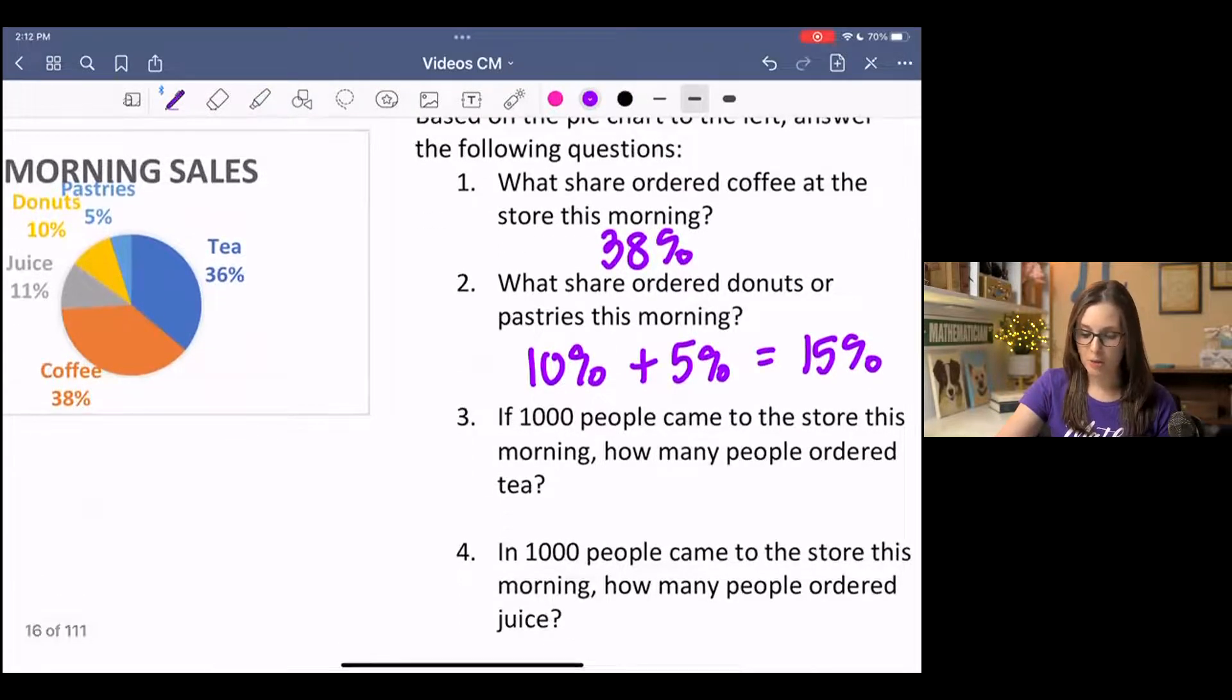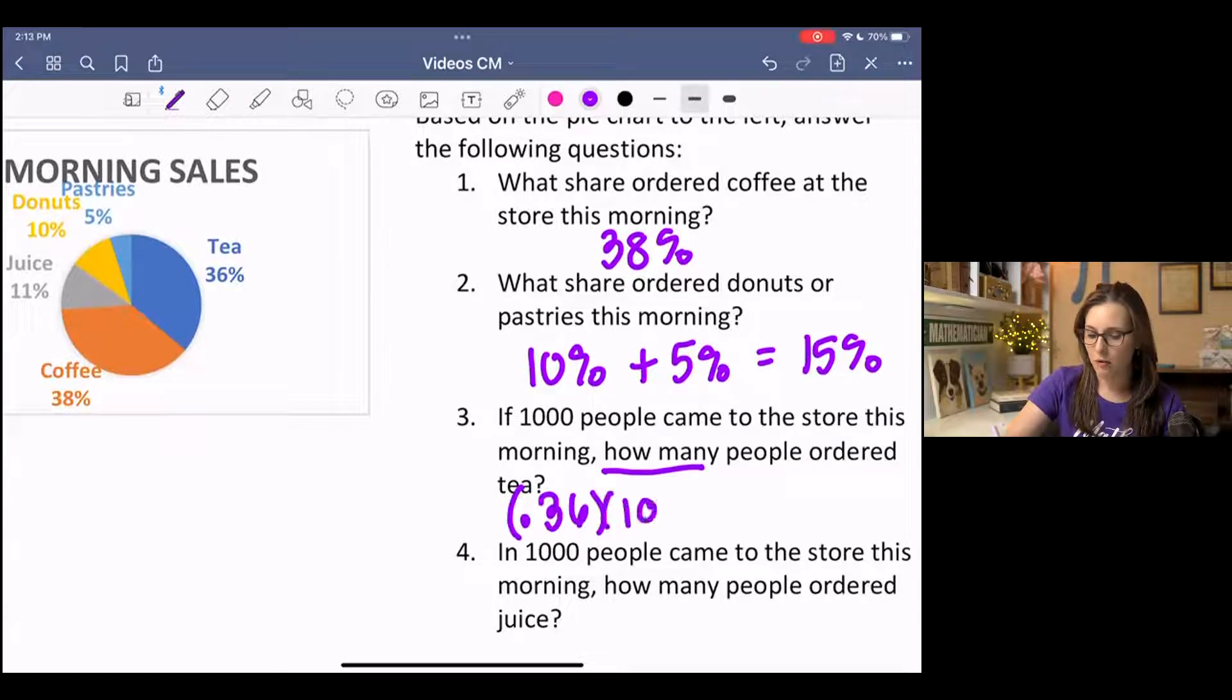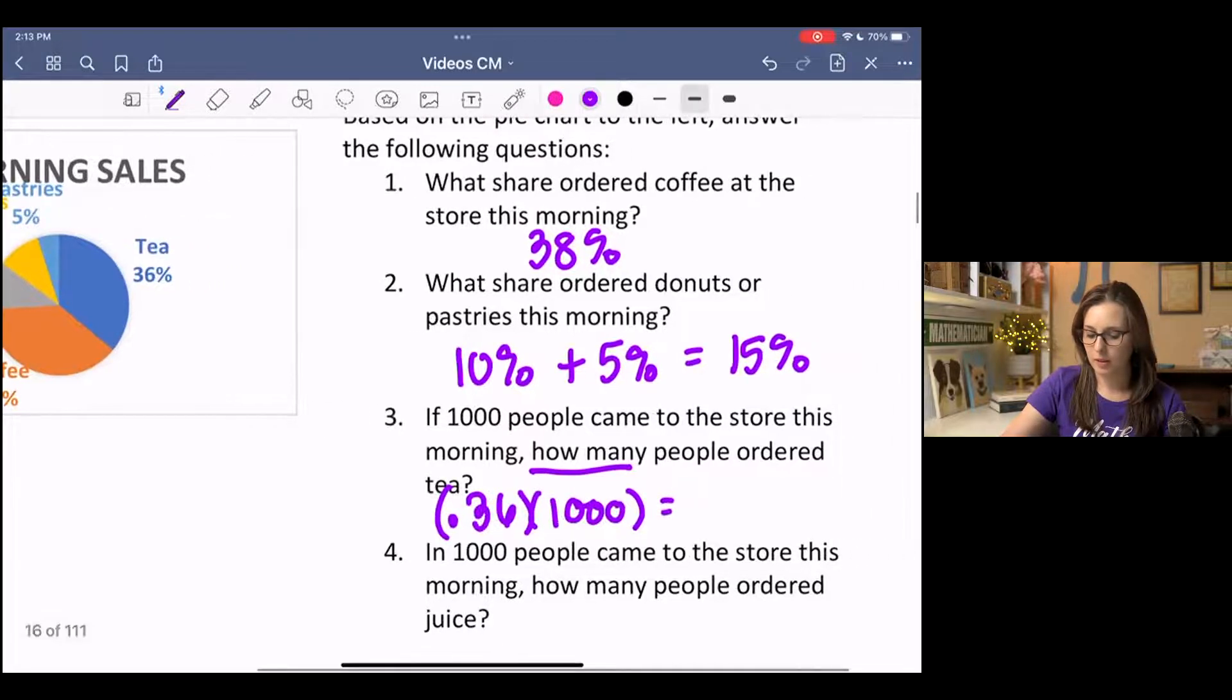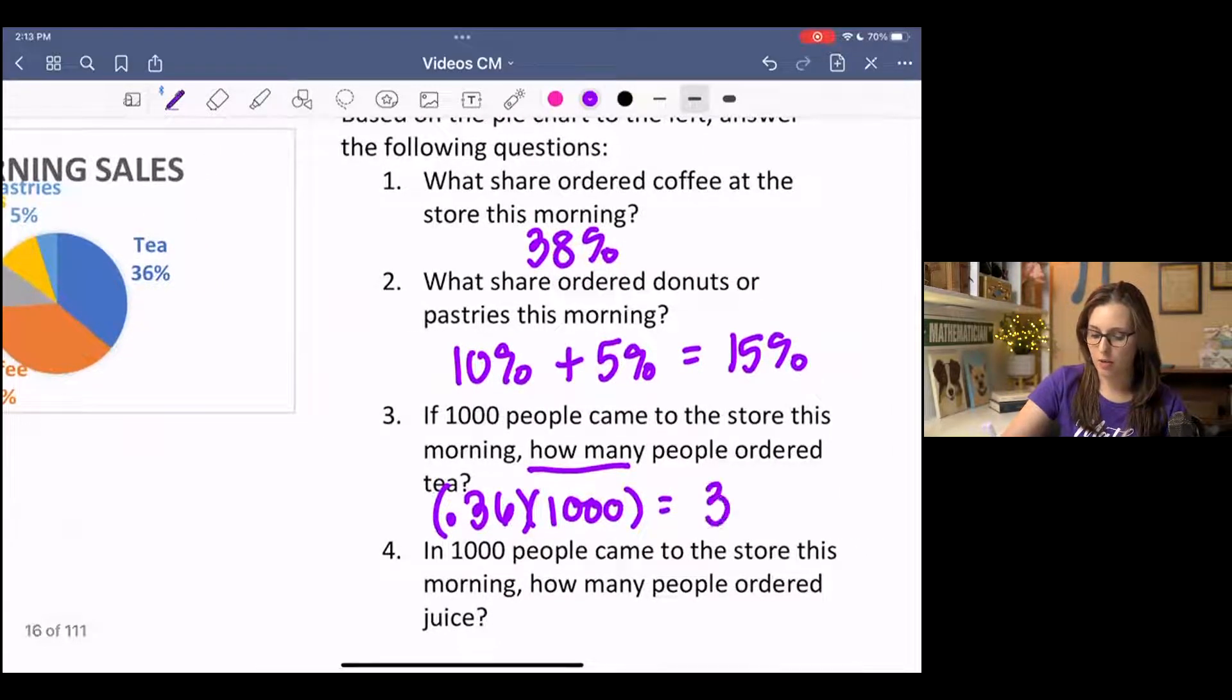So if 1,000 people came to the store this morning, how many people ordered tea? This is not asking for the percent of people who ordered tea, but how many. So if we look at the pie chart, we can see that 36% of the people ordered tea. Now listen to my wording there. 36% of the people ordered tea. So 36% in decimal form of how many people came in ordered tea. That is going to be 360.